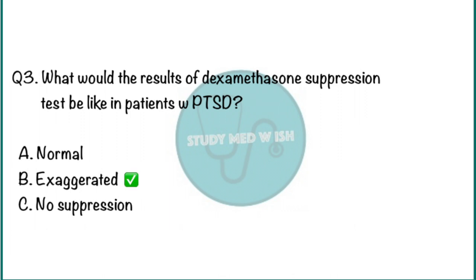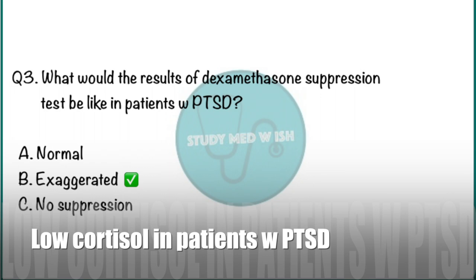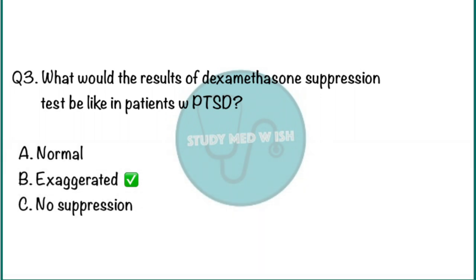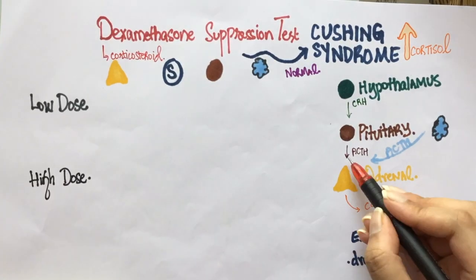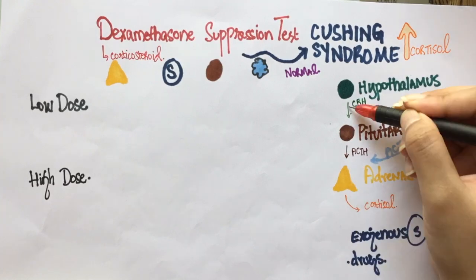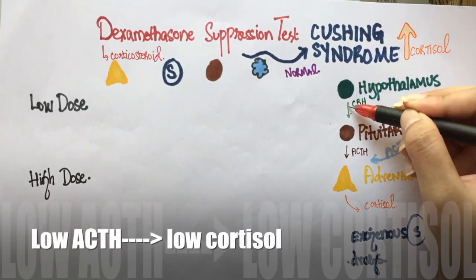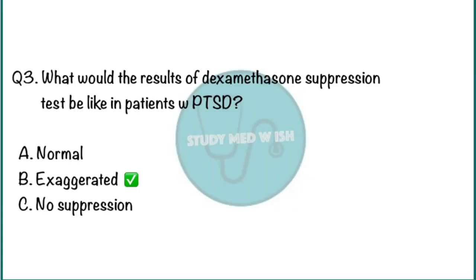The answer is exaggerated. Cortisol is a stress hormone. However, in patients with post-traumatic stress disorder, there are very low levels of cortisol. Cortisol helps us cope with stress, and low levels of cortisol might probably be the reason why patients with PTSD find it very hard to cope with stress. Since cortisol levels are already low in these patients, by giving them dexamethasone, we reduce ACTH levels by negative feedback. This will further decrease the cortisol levels in patients with PTSD. Hence, the test is exaggerated in patients with post-traumatic stress disorder.